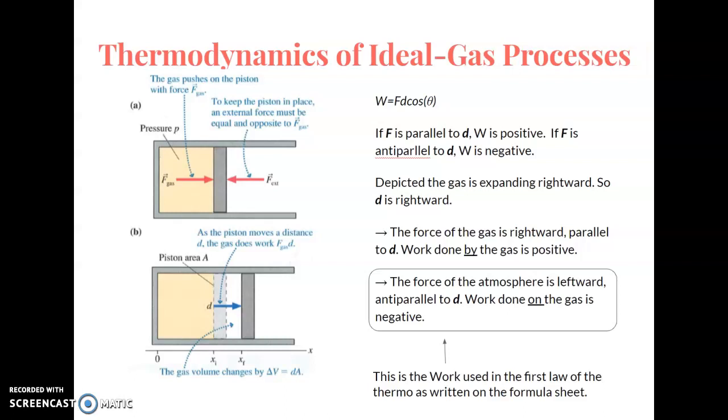First I'm going to focus on expansion and the work done by the gas. So we have work being Fd cosine theta. So F is the force we're analyzing, the force of the gas, not the net force. If that force is parallel to displacement, then work is positive, because cosine theta is cosine of zero, which is one. And if it's anti-parallel, cosine of 180 gives us negative work. In our picture here, it's displacing to the right, and the force of the gas is to the right. So the work done by the gas is positive.